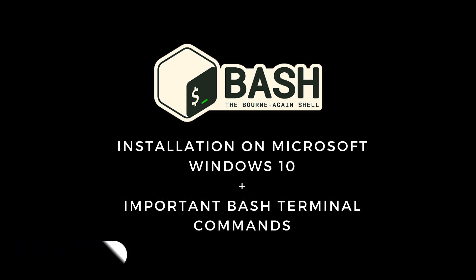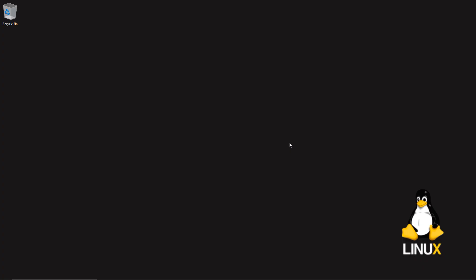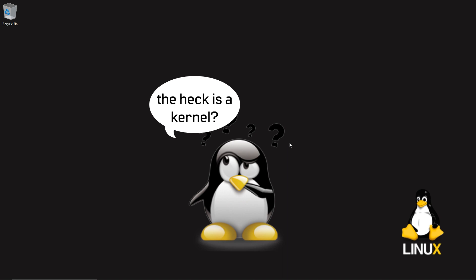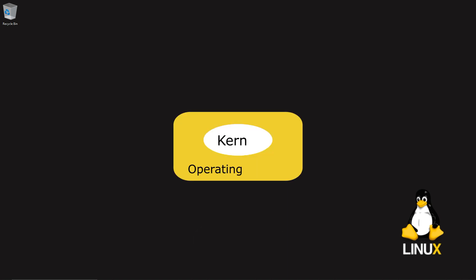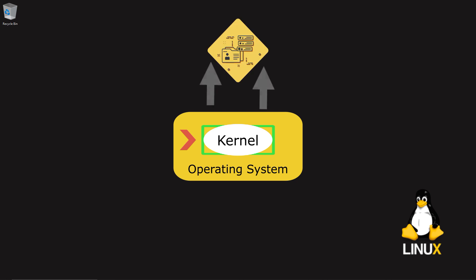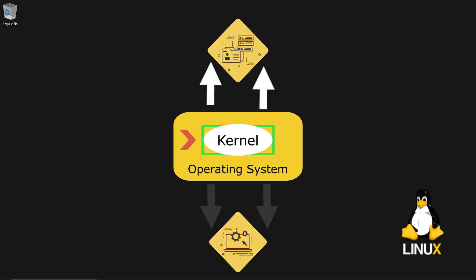Linux is not an operating system — Linux is a kernel. A kernel is a computer program at the heart of the operating system; it has complete control over everything. The kernel is the part of the operating system code that always lives in memory.